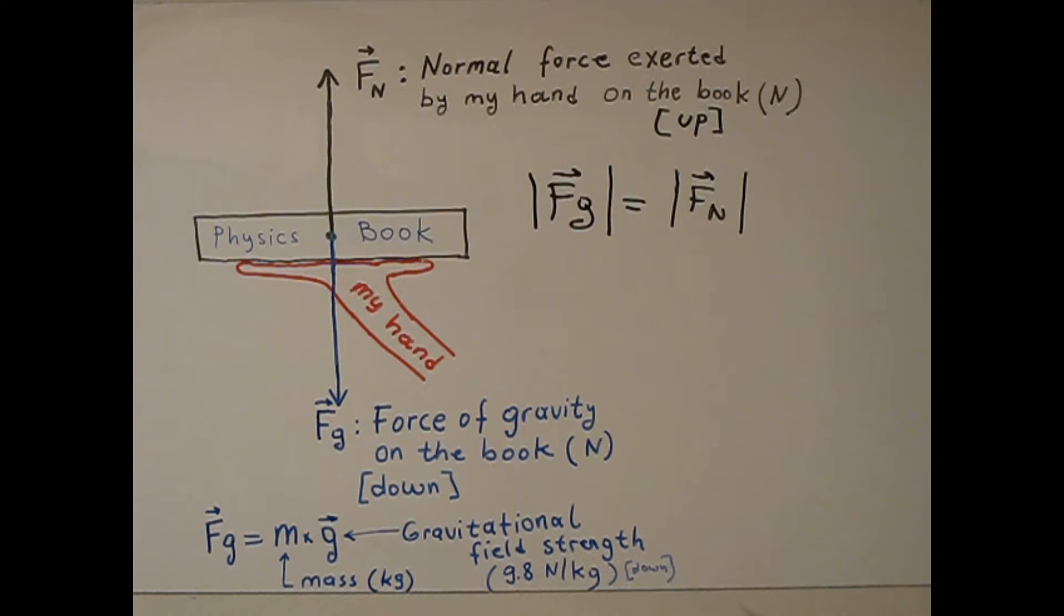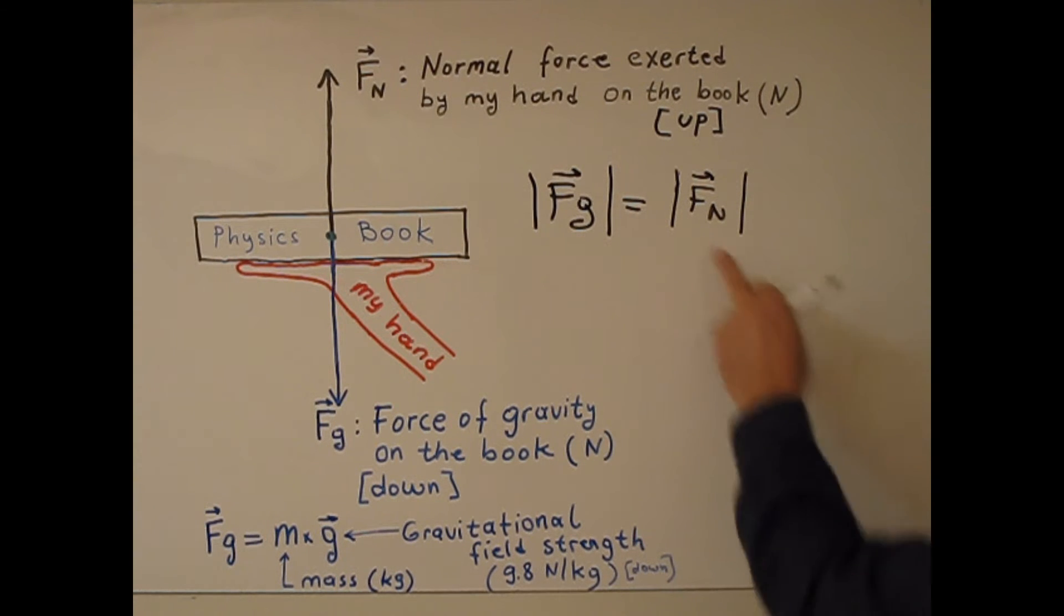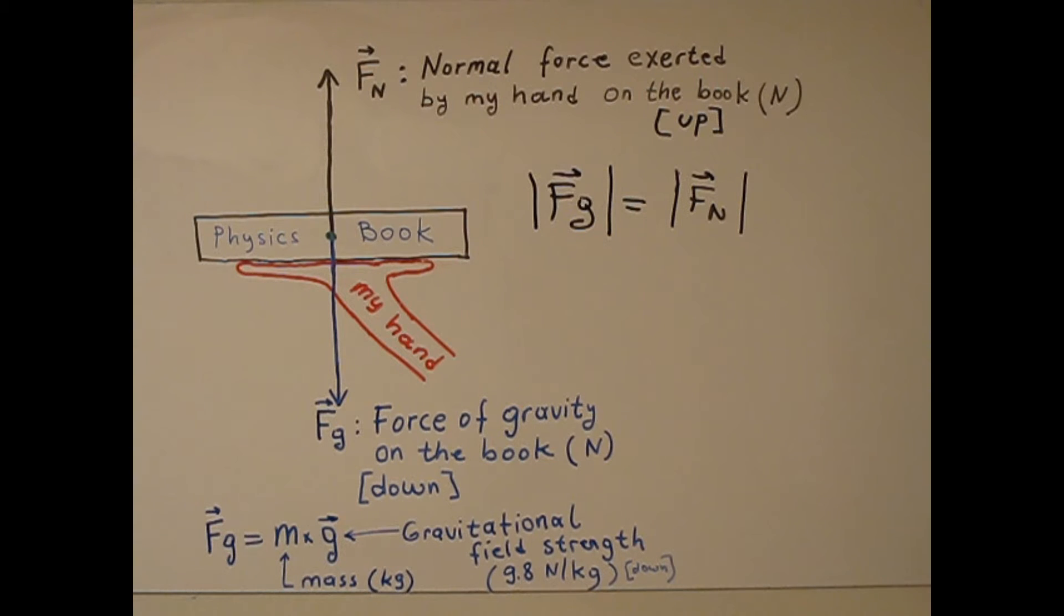If also my hand moves with a constant velocity, it means without acceleration up or down, in this case also this is valid. Magnitude of Fg equal magnitude of Fn.